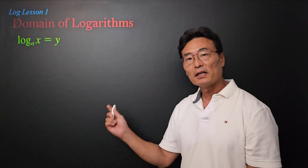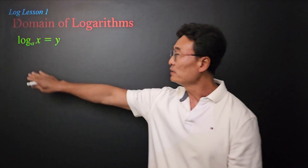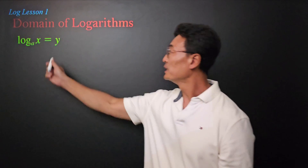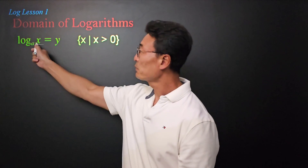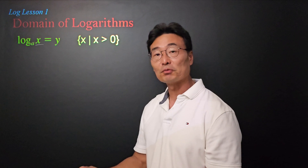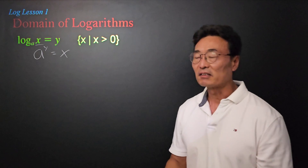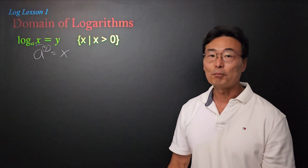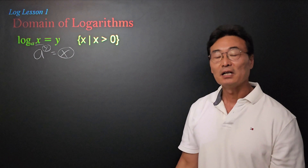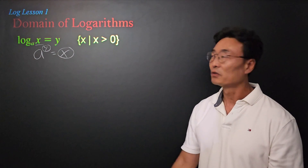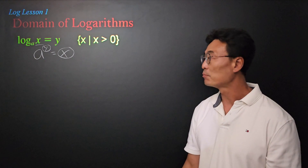For the final part of this lesson, let's go over the domains of logs. When we're given log of x equals y, the domain — meaning x — must be greater than zero. The reason: if we change that log equation into an exponential equation it becomes a to the y equals x, and any number raised to an exponent cannot be negative or zero.